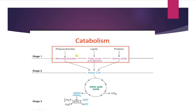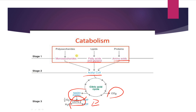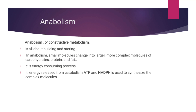آئیے catabolism کو graph کے ذریعے دیکھتے ہیں۔ پہلی stage میں complex molecules جیسے polysaccharides monosaccharides میں، lipids fatty acids میں، اور proteins amino acids میں تبدیل ہوتے ہیں۔ یہ سب simple compounds acetyl-CoA میں آتے ہیں، پھر Krebs cycle شروع ہوتی ہے جس میں citric acid cycle ہوتا ہے۔ اس میں carbon dioxide release ہوتی ہے اور NADH بنتا ہے۔ اس کے بعد electron transport chain میں ATP بنتی ہے اور water molecule بھی release ہوتا ہے۔